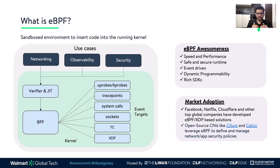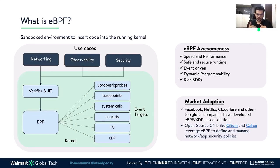The just-in-time compilation step translates the generic byte code of the program into machine-specific instruction set to optimize execution speed. This makes eBPF programs run as efficiently as natively compiled kernel code.